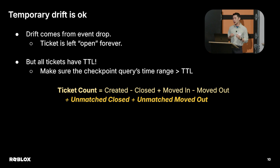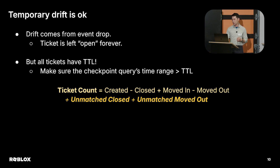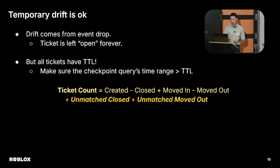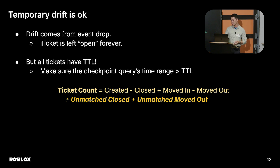The nice thing is that all our tickets have a TTL, so we would never have a ticket stuck in a queue for two weeks — our system automatically closes it. All we need to do is make sure the checkpoint query's time range is larger than the TTL. This means we might see some close events without corresponding open events, since we're only looking at the last two weeks or so.